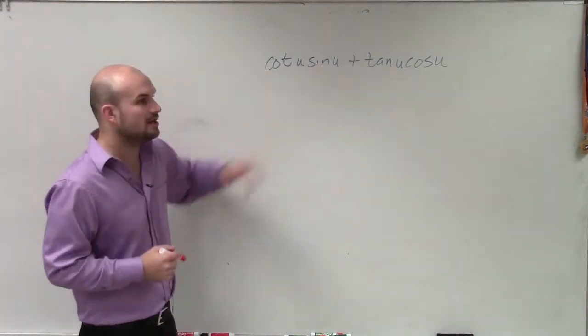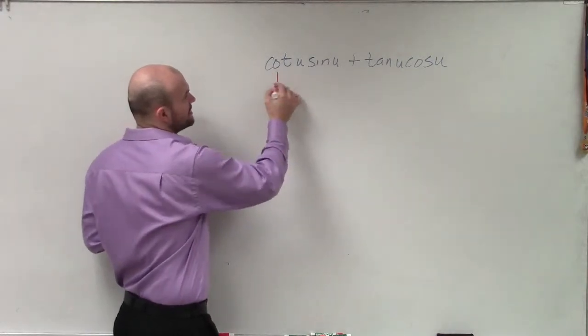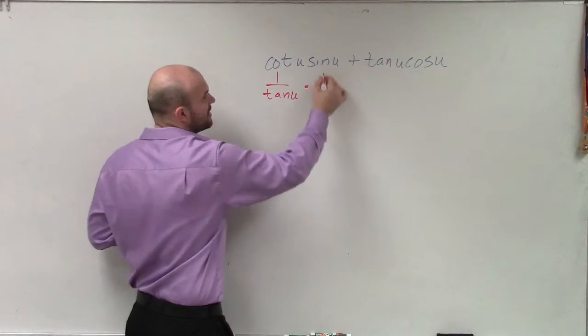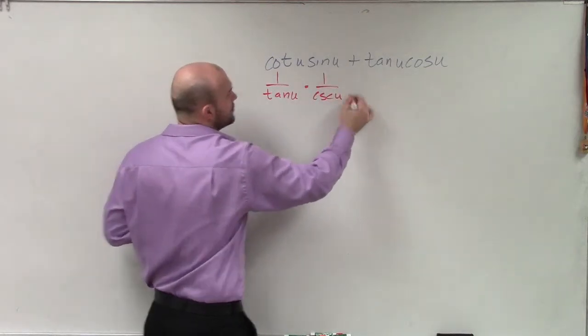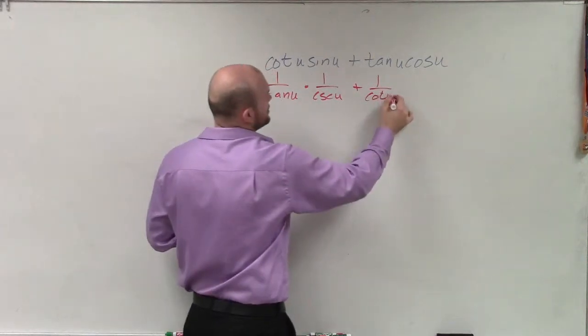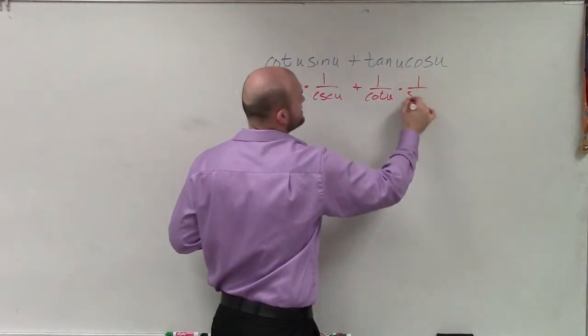So what I saw a lot was students maybe using this as, you know, they'd say 1 over tangent of u, and then they say, well, sine I can write as 1 over cotangent of u plus 1 over cotangent of u times 1 over secant of u.